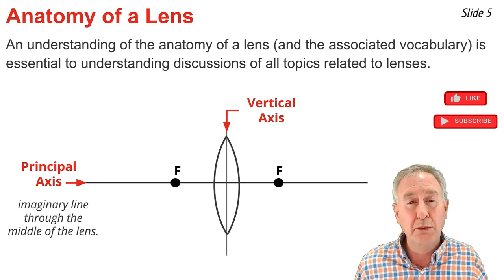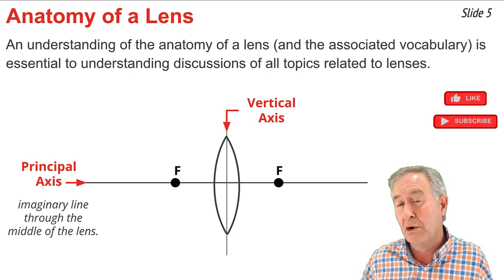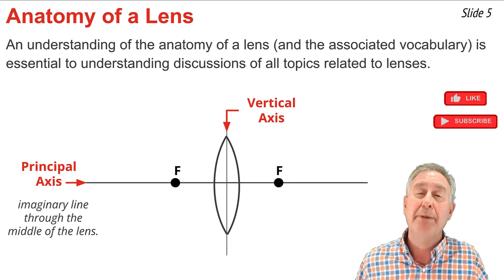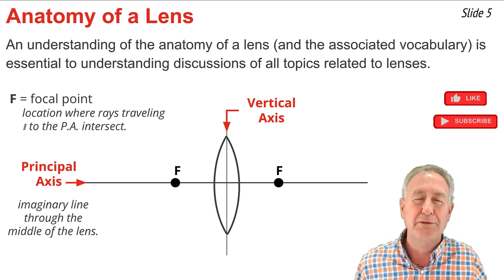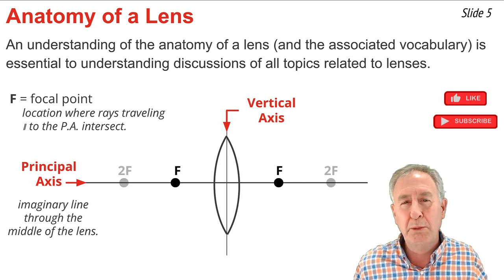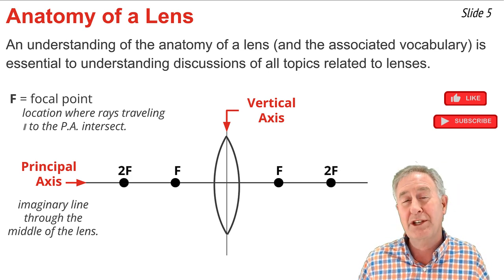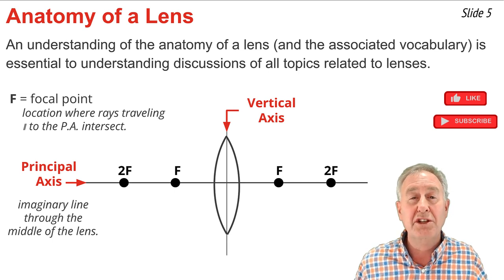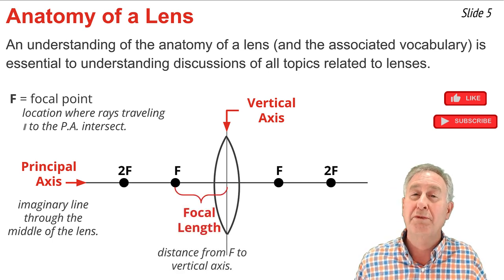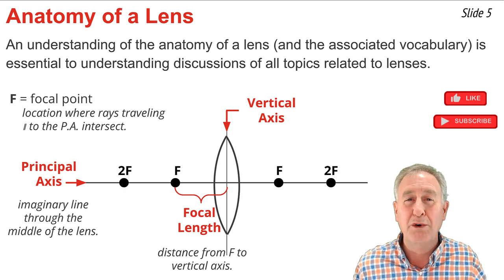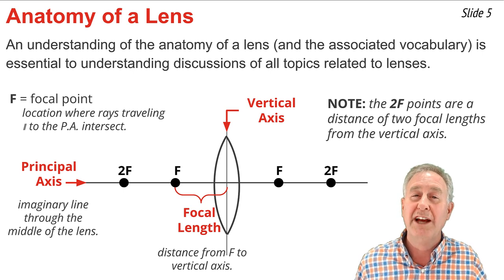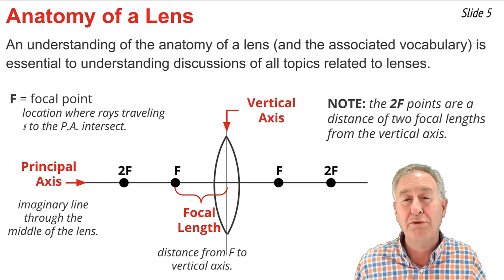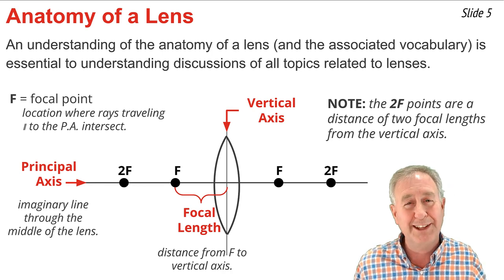Along the principal axis are two points referred to as the focal points, abbreviated by a capital F. The focal points are the locations where parallel incident rays will intersect upon emerging from the lens. There are also two points referred to as the two F points. The distance from the focal point to the vertical axis of the lens is known as the focal length, and the two F points are a distance of two focal lengths from the vertical axis of the lens.